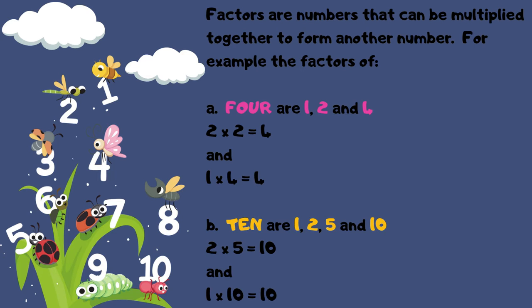For example, the factors of 10 are 1, 2, 5, and 10, where 2 times 5 is equal to 10 and 1 times 10 is equal to 10.